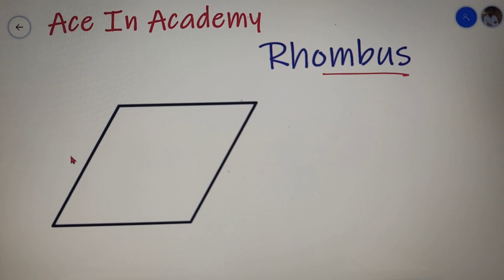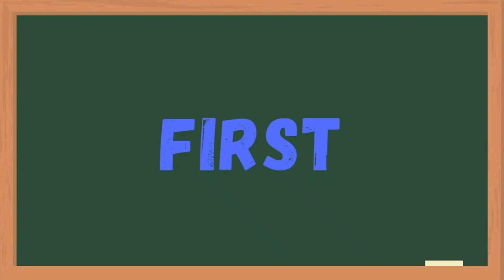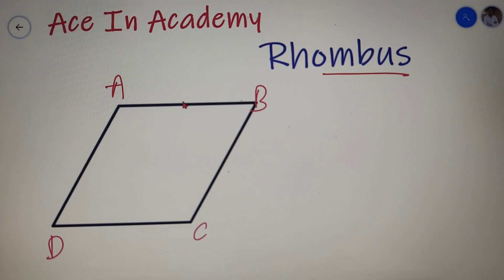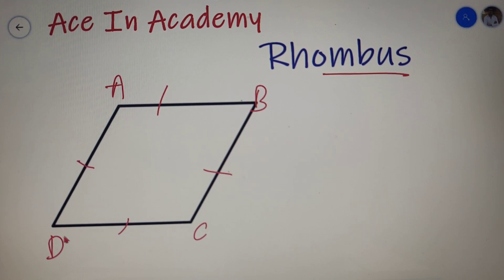The shape that we have over here is a rhombus. Let's name its vertices as A, B, C and D respectively. Now the first property of a rhombus is that all the sides of a rhombus are equal. So I can say that AB is equal to BC, BC is equal to CD, and CD is equal to AD.